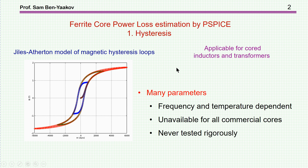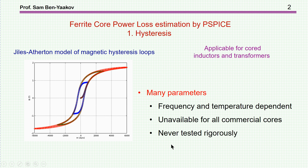PSPICE has a built-in ability to run a hysteresis loop of a ferromagnetic material. However, this model, which is based on the Jiles-Atherton model, has very many parameters that are frequency and temperature dependent. Unfortunately, these parameters are unavailable for all commercial cores — they are available for only certain selections. And the worst thing is that this method for estimating the power loss has actually never been tested rigorously, that is, to run simulation of many cores and compare the result, the power loss, to other methods for which we have a lot of data.